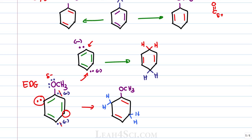The shortcut is to look at the starting molecule and ask: can I place a negative charge on the carbon holding the substituent? If yes, reduce that carbon. If not, reduce the carbon next to it. And whenever you reduce the first carbon, always reduce the carbon exactly opposite.